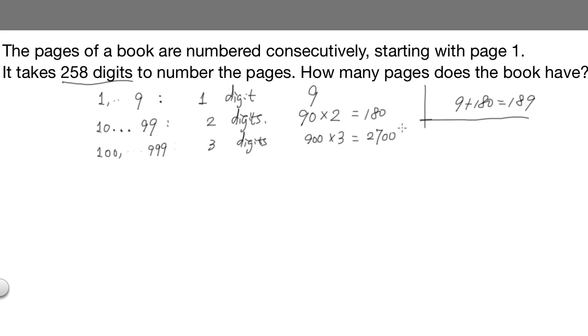That's going to overshoot. So we know that somewhere here, the page number will stop. And let's assume there will be n three-digit numbers.